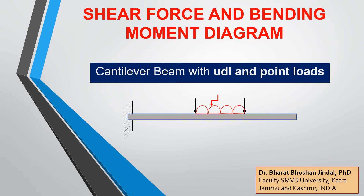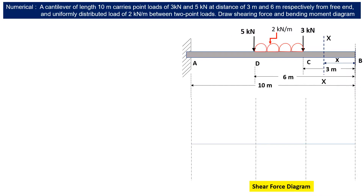Hello everyone. In this lecture we are going to draw shear force and bending moment diagram for a cantilever beam with UDL on some portion of the beam along with some point loads. The cantilever beam has a span of 10 meters, loaded with two point loads: 3 kN at 3 meters from free end B, and 5 kN at 6 meters from free end. A uniformly distributed load of intensity 2 kN/m acts between sections C and D.